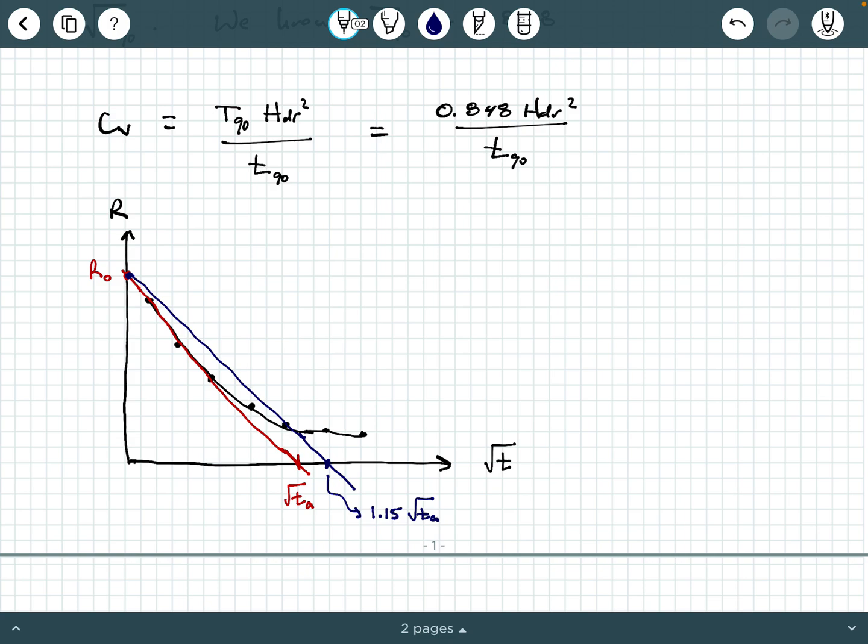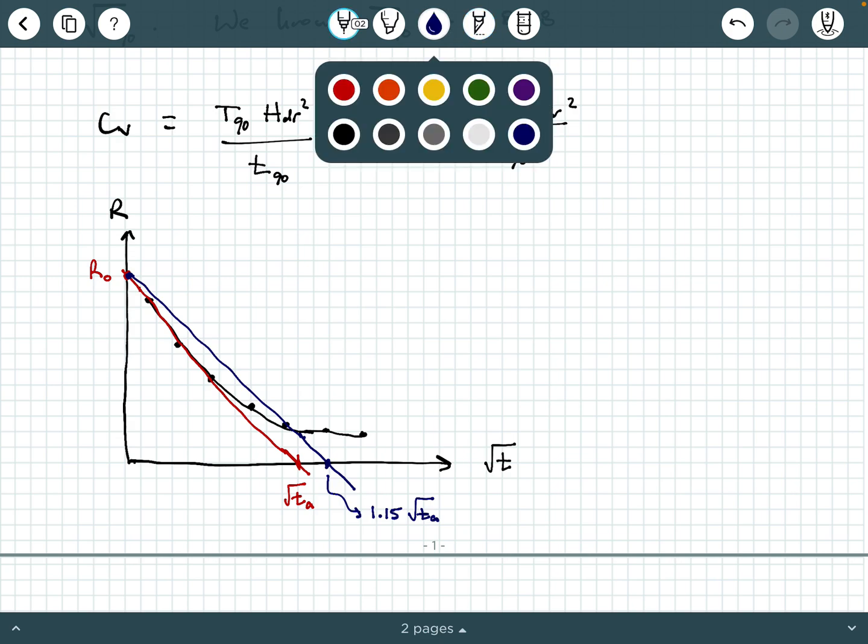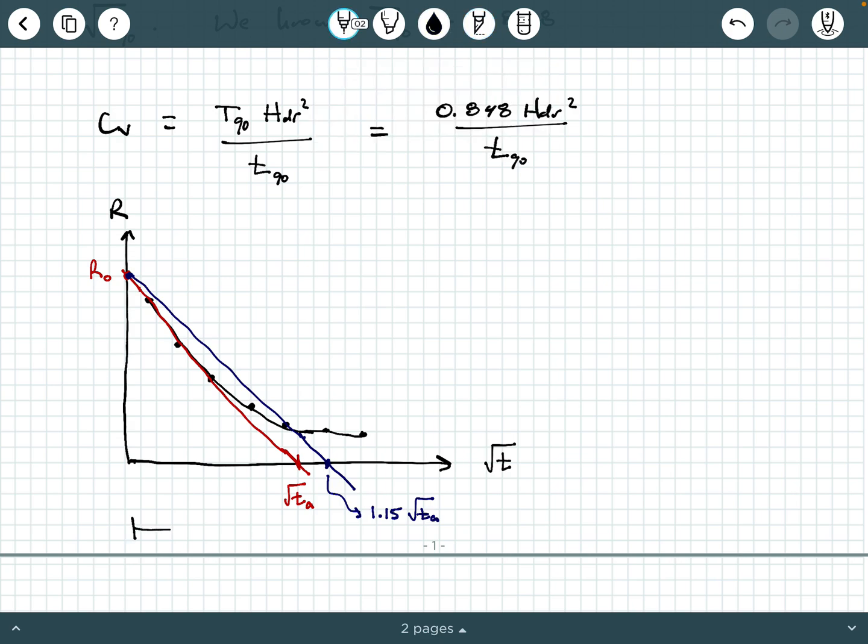So what I do numerically is I'll take this value right here and I'll just multiply it by 1.15. And that will give me this value. And then what you could do is kind of go backwards. You could extend it from here back up to R naught. So either way, if this distance is maybe distance D, then this distance should be 1.15 times D.